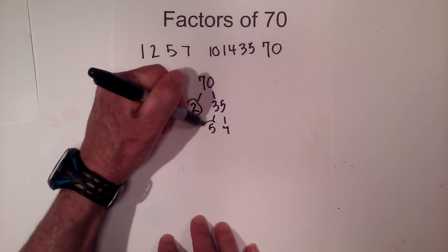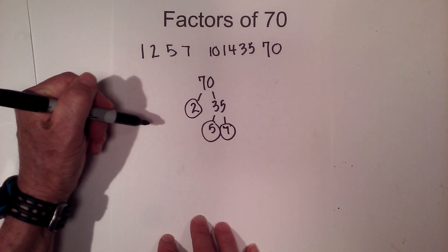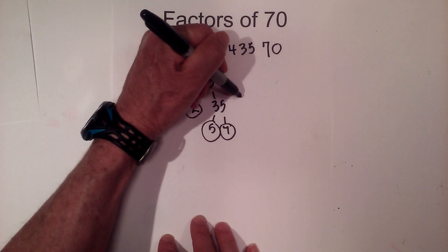So the prime factors of 70 are 2 times 5 times 7.